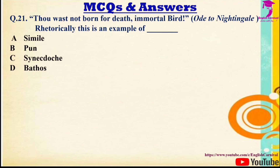Question 21: 'Thou wast not born for death, immortal bird!' — Rhetorically, this is an example of — Options: A) Simile, B) Pun, C) Synecdoche, D) Bathos. The correct answer is C — Synecdoche.